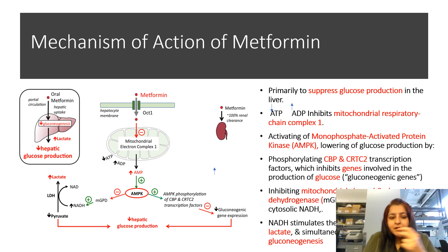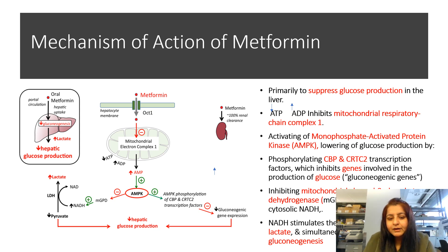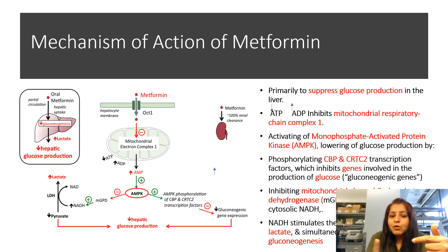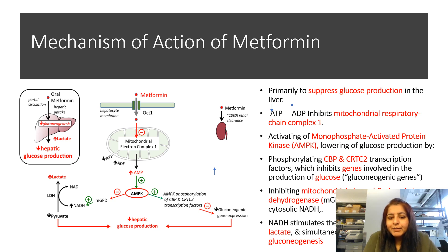The consequence of converting pyruvate into lactate is significant because pyruvate is an intermediate of the glycolytic pathway. If pyruvate is not converted into lactate, it would enter the gluconeogenic pathway and form glucose. By diverting pyruvate to lactate, metformin inhibits mitochondrial complex I and thereby inhibits the production of glucose from non-carbohydrate sources.